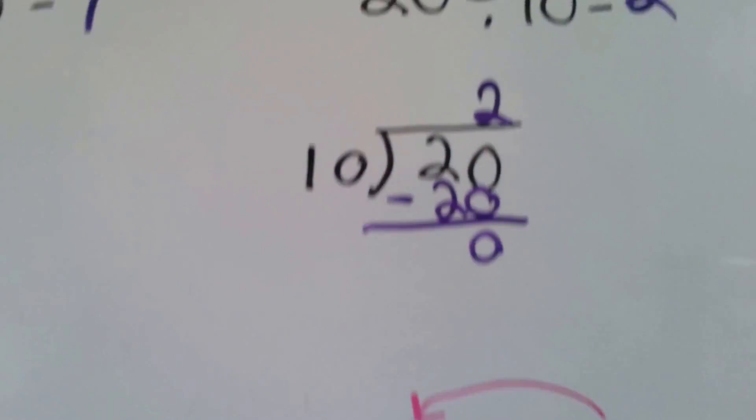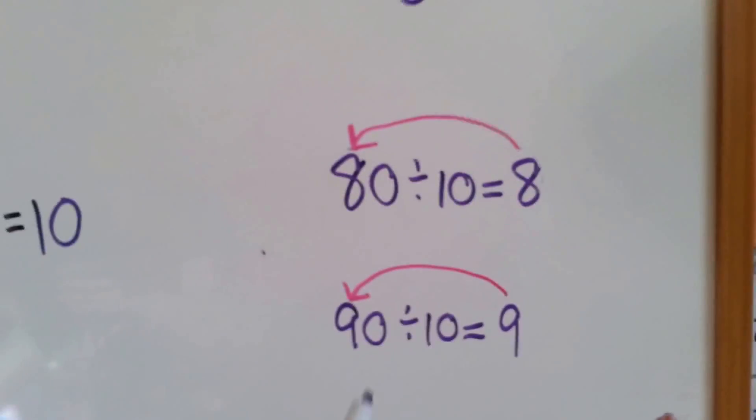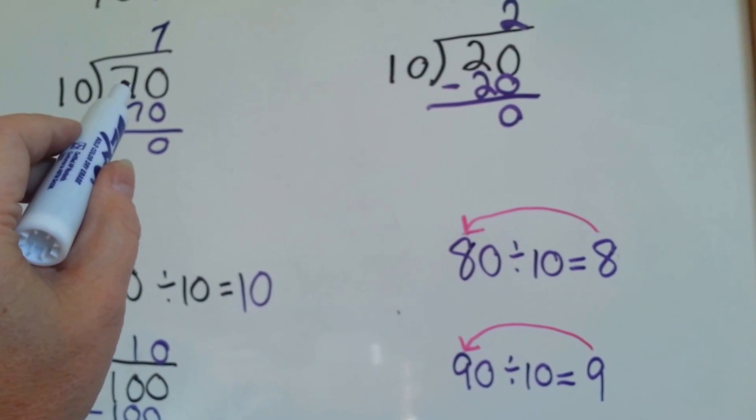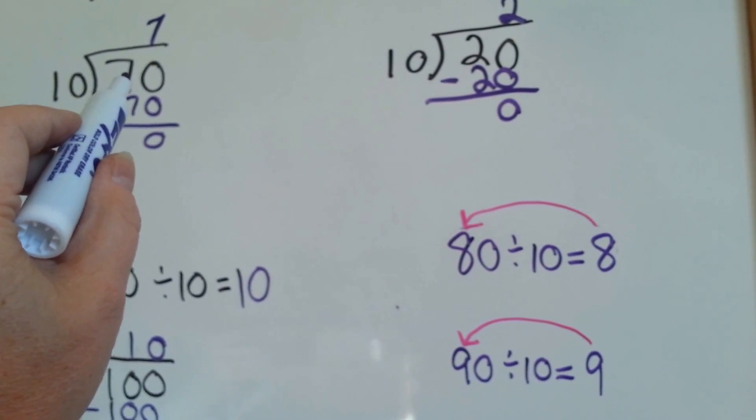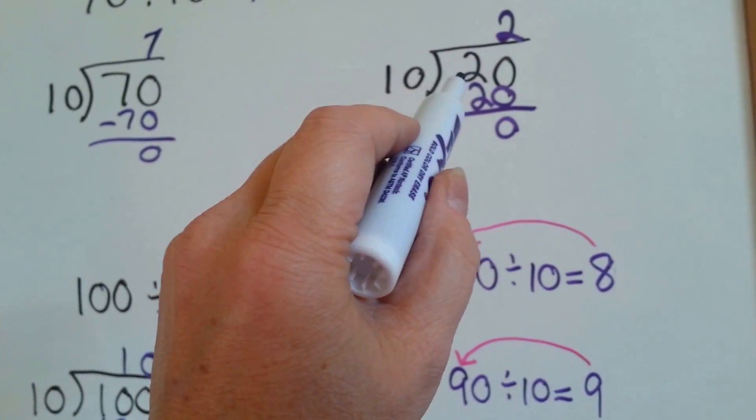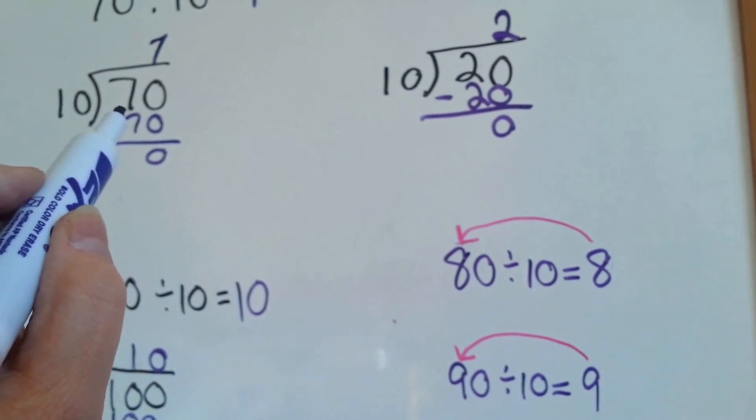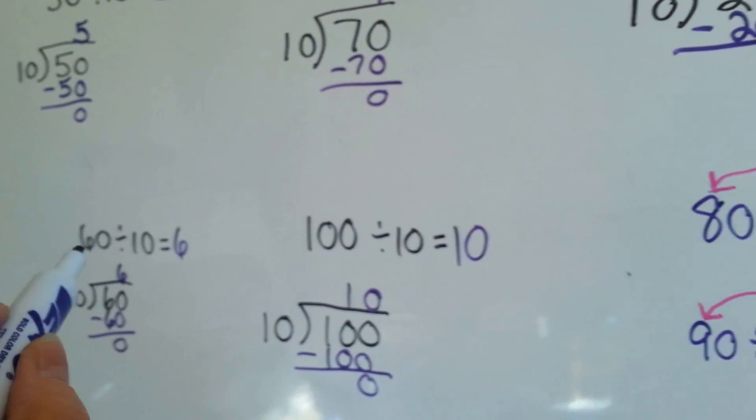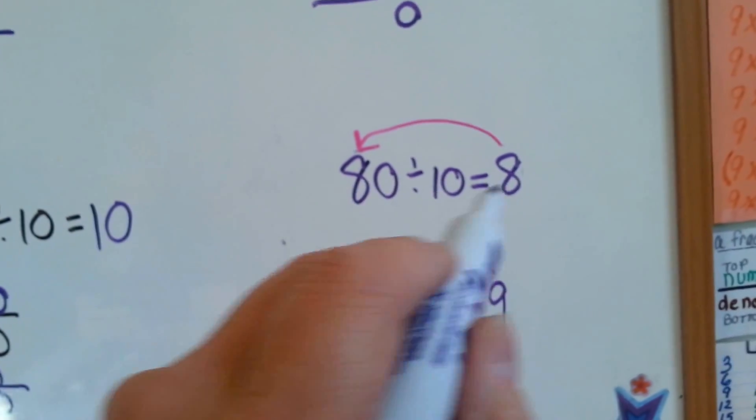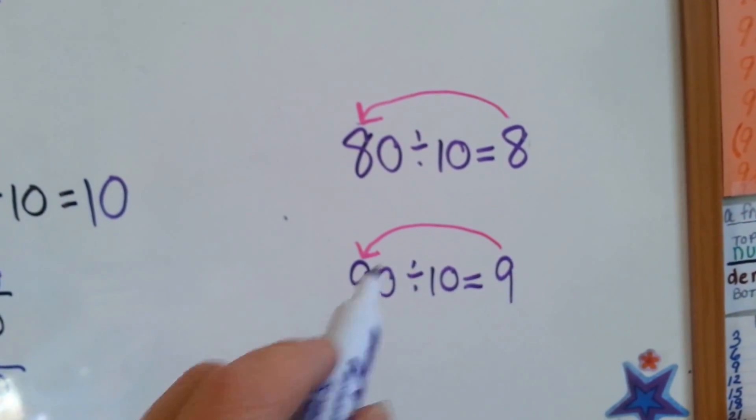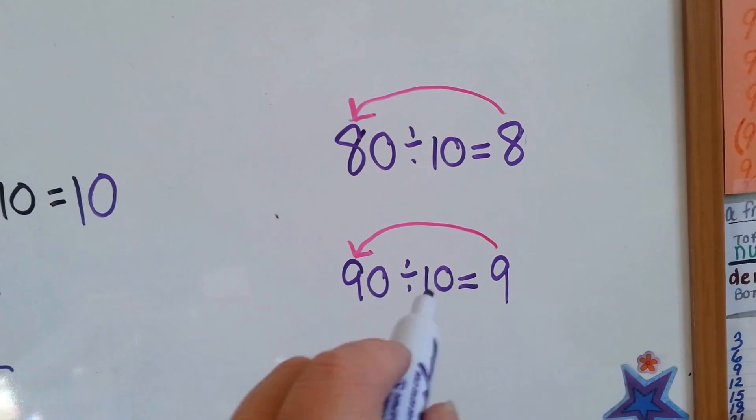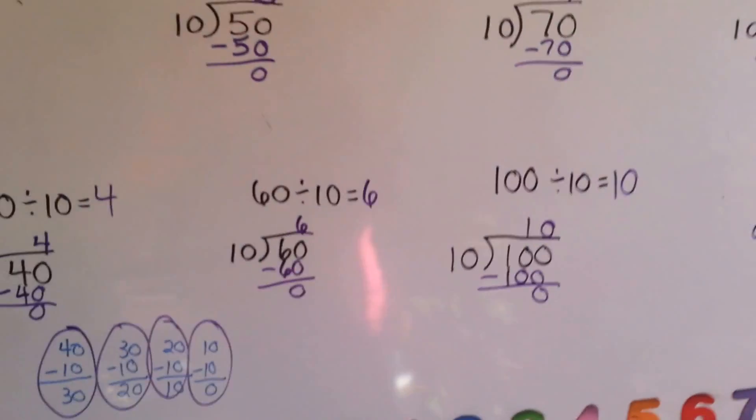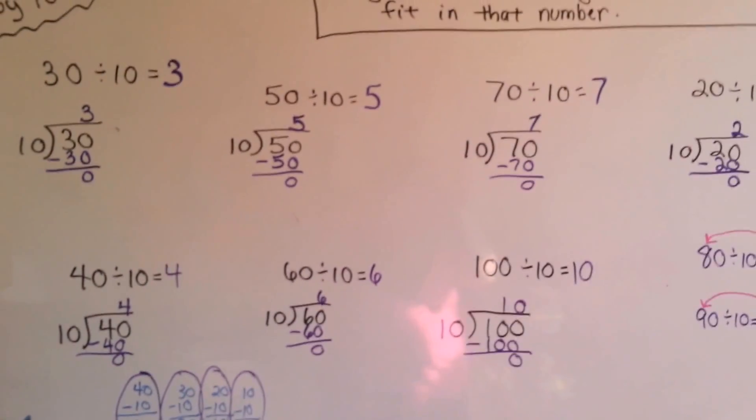Now I'm going to show you a quick trick. Did you notice that the answer in all of these is the first number of that number with 10s? 20 has a 2. The answer was 2. 70 has a 7. The answer was 7. 60 has a 6. The answer was 6. 80 has an 8. The answer is 8. 90 has a 9. The answer was 9. So that's another quick way of looking at the answer for dividing by 10.